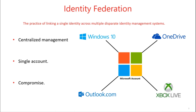Look at the example over here on the right-hand side where we have the Microsoft account, and all of these different disparate systems have an account that allows you to have a single sign-on. So Windows 10, OneDrive, Xbox, and Outlook.com, Office 365 — you can streamline by using identity management systems with one account.